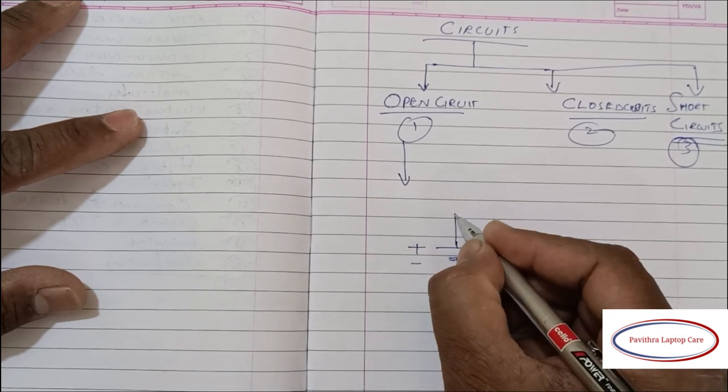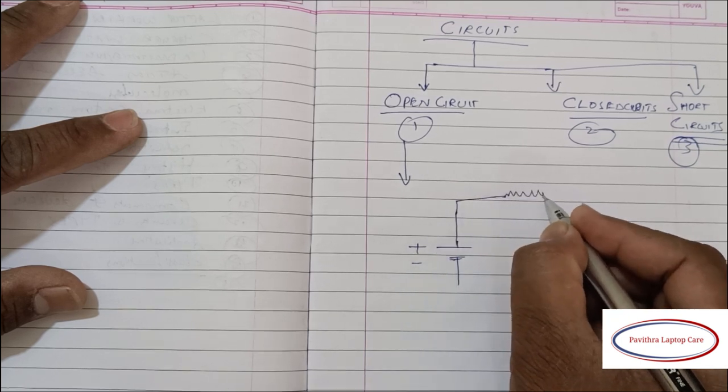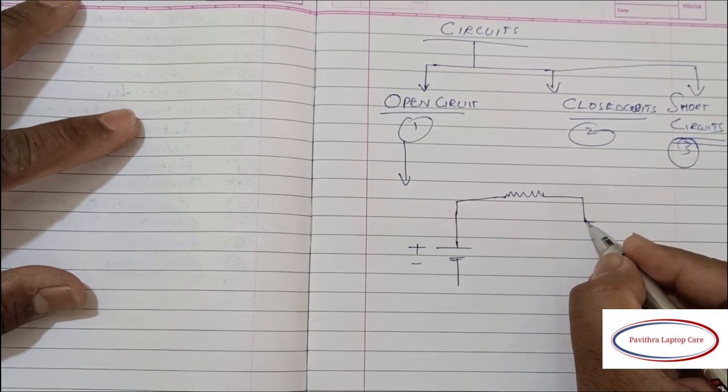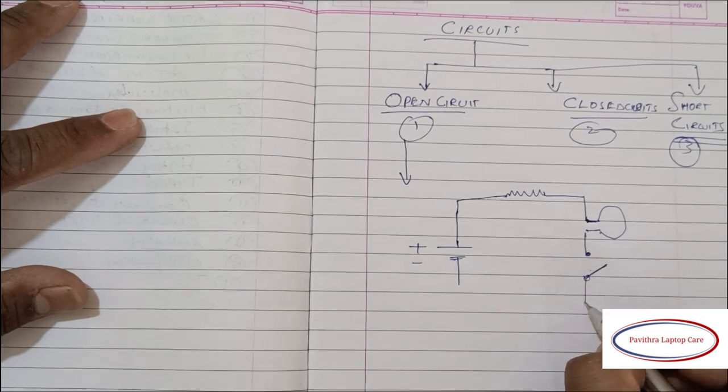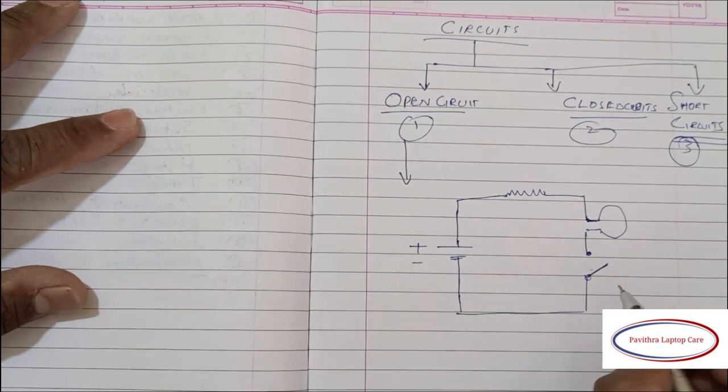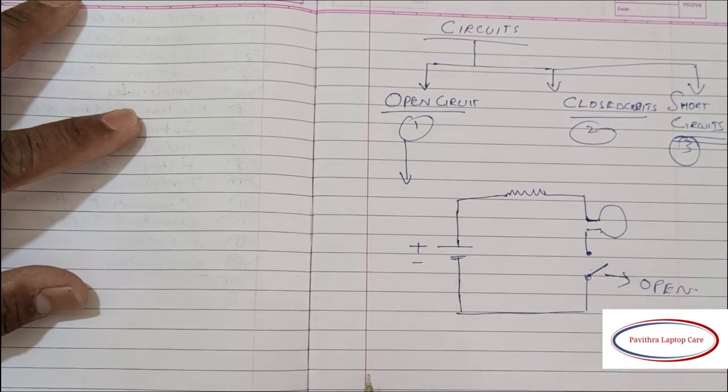I will put a diagram for open circuit. A bulb is connected through a resistor with a switch, and it will be in open condition. So this is called open circuit.